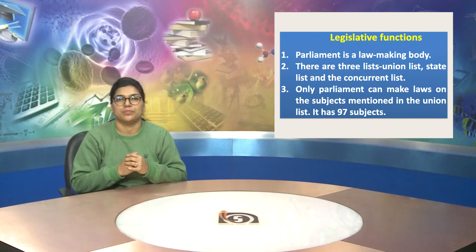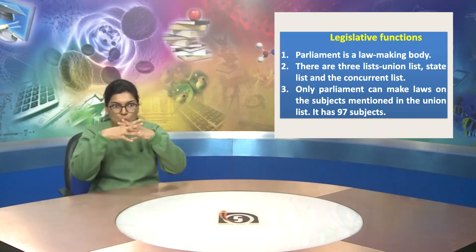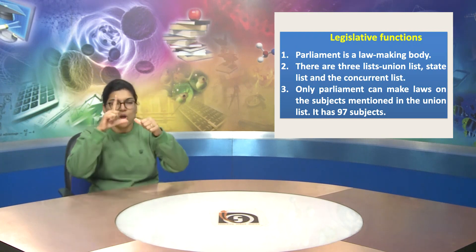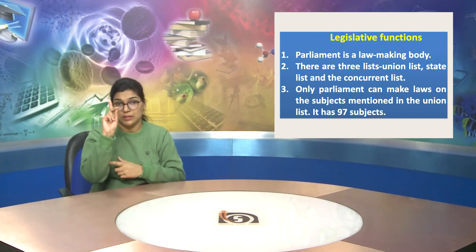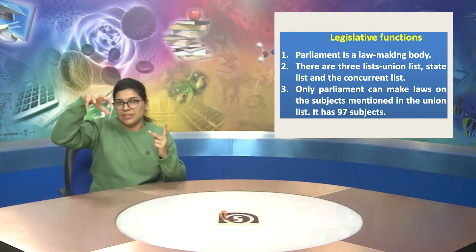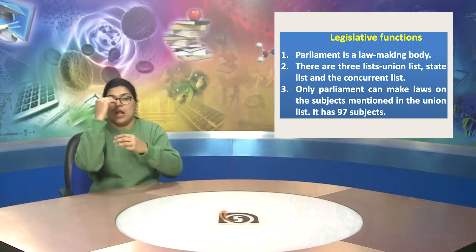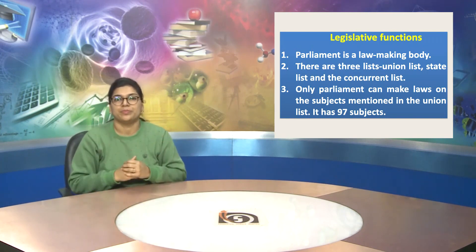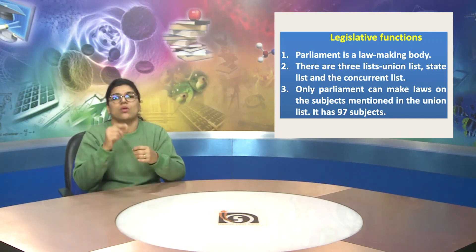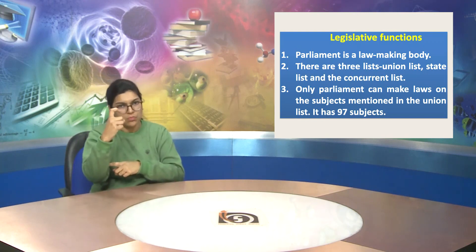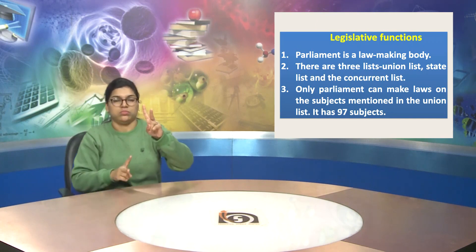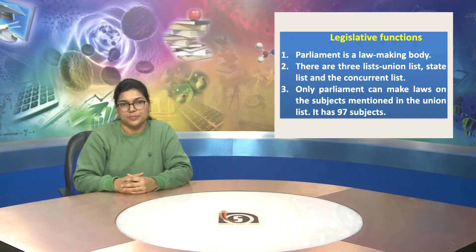The first is legislative functions — it is one of the important powers. Point number one: Parliament is a lawmaking body. Point number two: there are three lists — the first is the Union List, the second is the State List, and the third is the Concurrent List. Point number three: only Parliament can make laws on the subjects mentioned in the Union List, and it has 97 subjects.